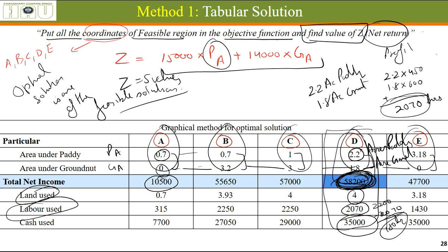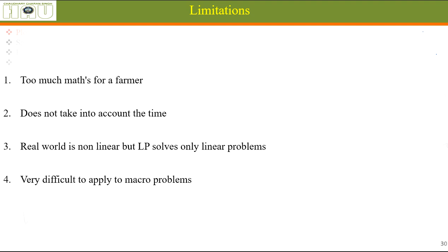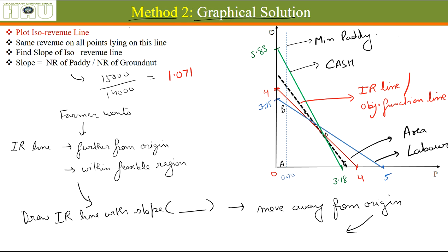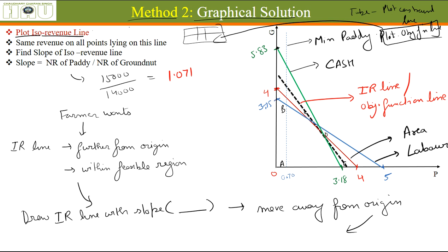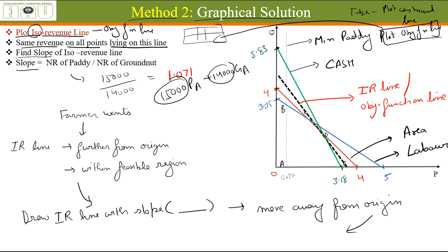There is one more method — the graphical method using the objective function line. First, we made a table, then we plotted the constraint lines. Now we also plot the objective function line — this is called the revenue line or iso-revenue line. Every point on this line has the same revenue. To plot it, we calculate the slope: 15,000 divided by 14,000 gives a slope of approximately 1.071.